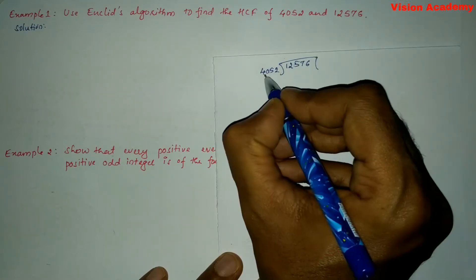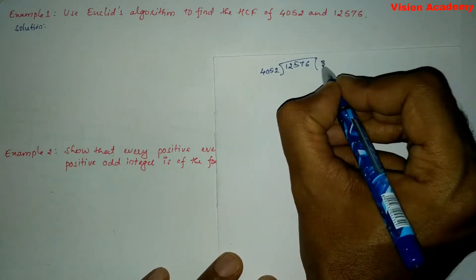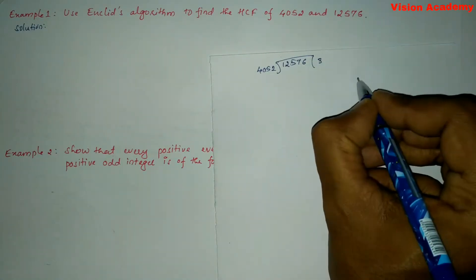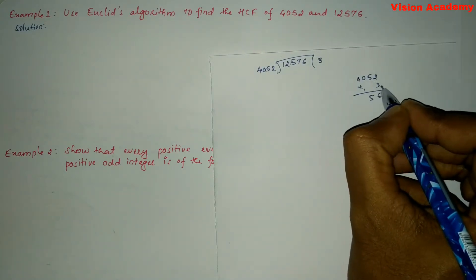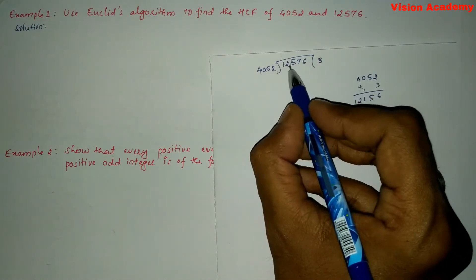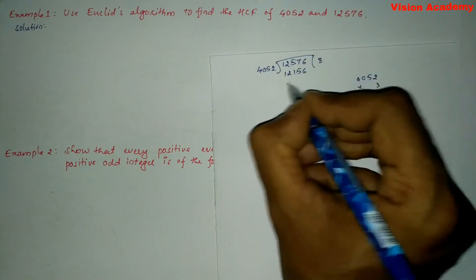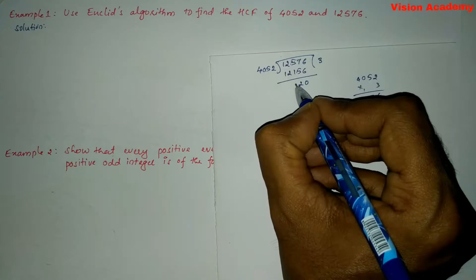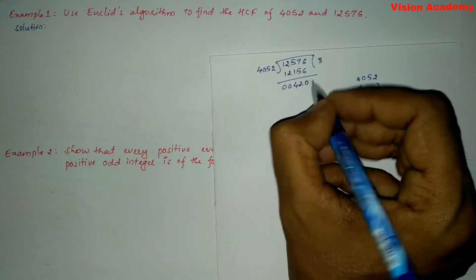Let us divide 12576 by 4052. Taking quotient 3: 4052 × 3 = 12156. Subtracting: 12576 − 12156 = 420. So 420 is the remainder. Now 420 is acting as divisor and 4052 as dividend. Dividing 4052 by 420: 420 × 9 = 3780. Subtracting: 4052 − 3780 = 272.